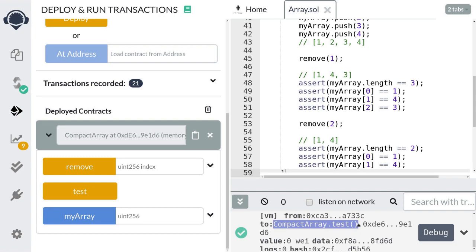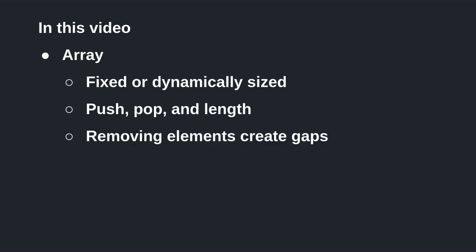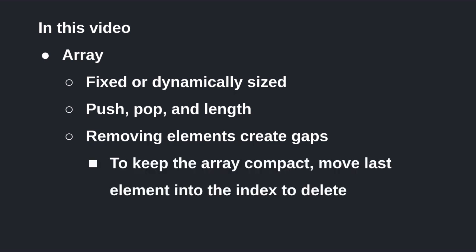That covers how to remove elements from an array while keeping the array compact. In this video, we went over how to create an array. Arrays can be declared as fixed size or dynamically sized. Arrays have three built-in functionalities: push, pop, and length. Deleting an element creates a gap in the array, and one trick to keep the array compact is to move the last element into the place to delete. If you have any questions, let me know in the comments below. Thanks for watching — have a nice week and I'll see you in the next video.